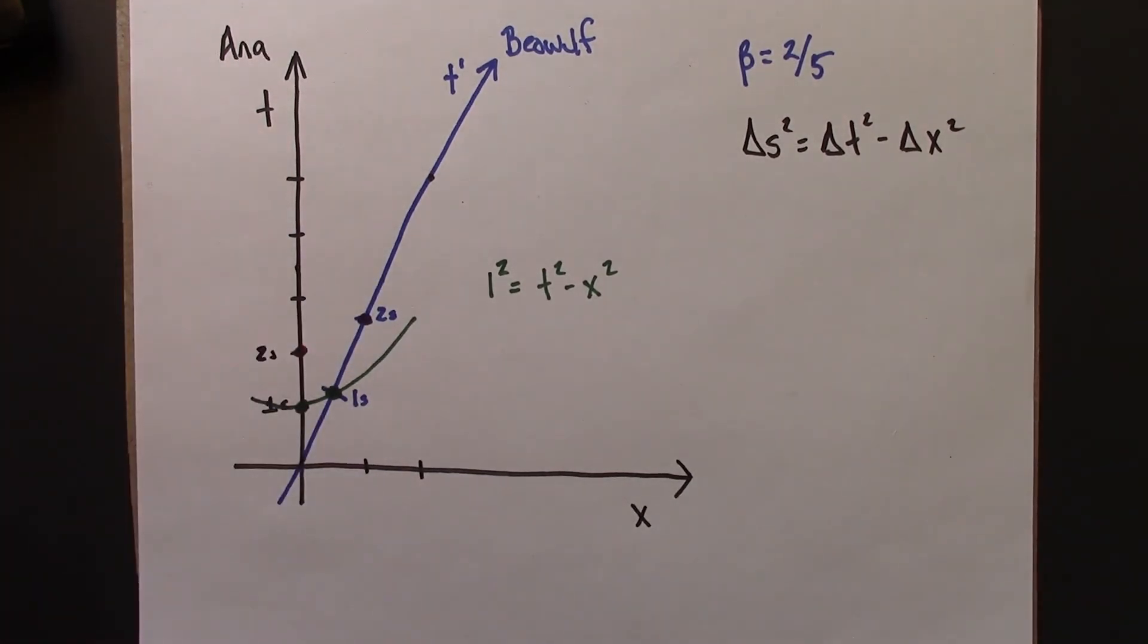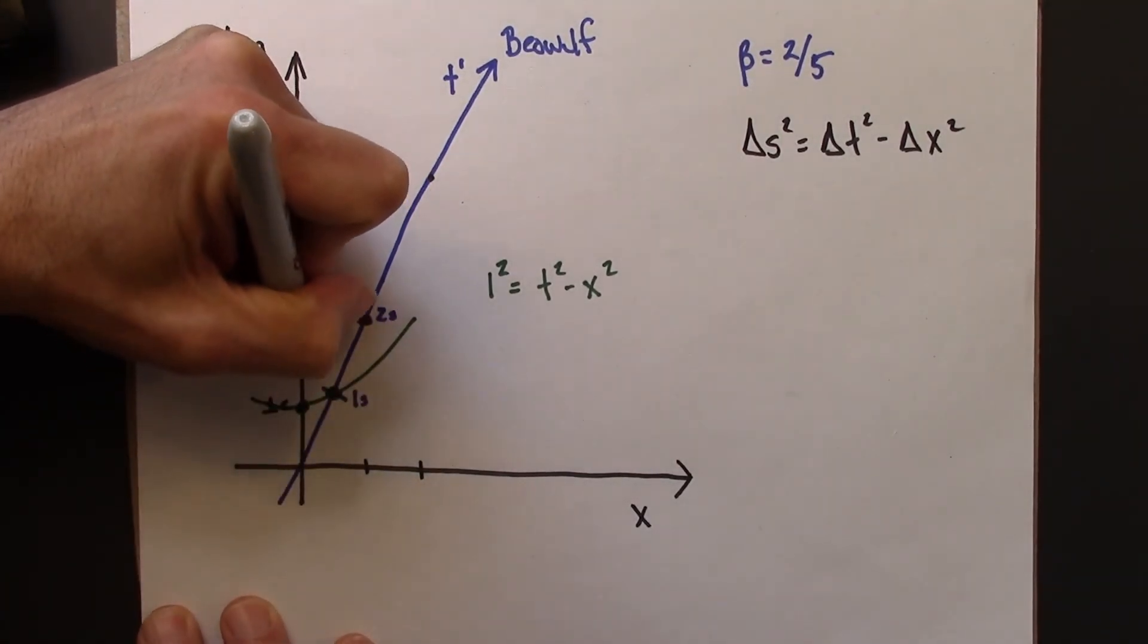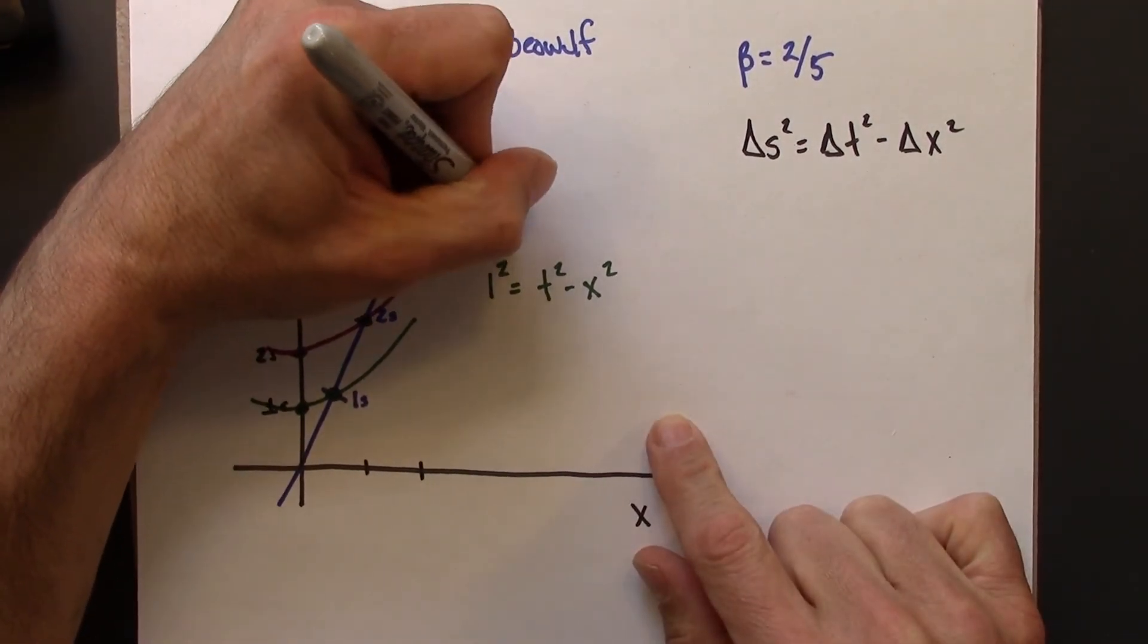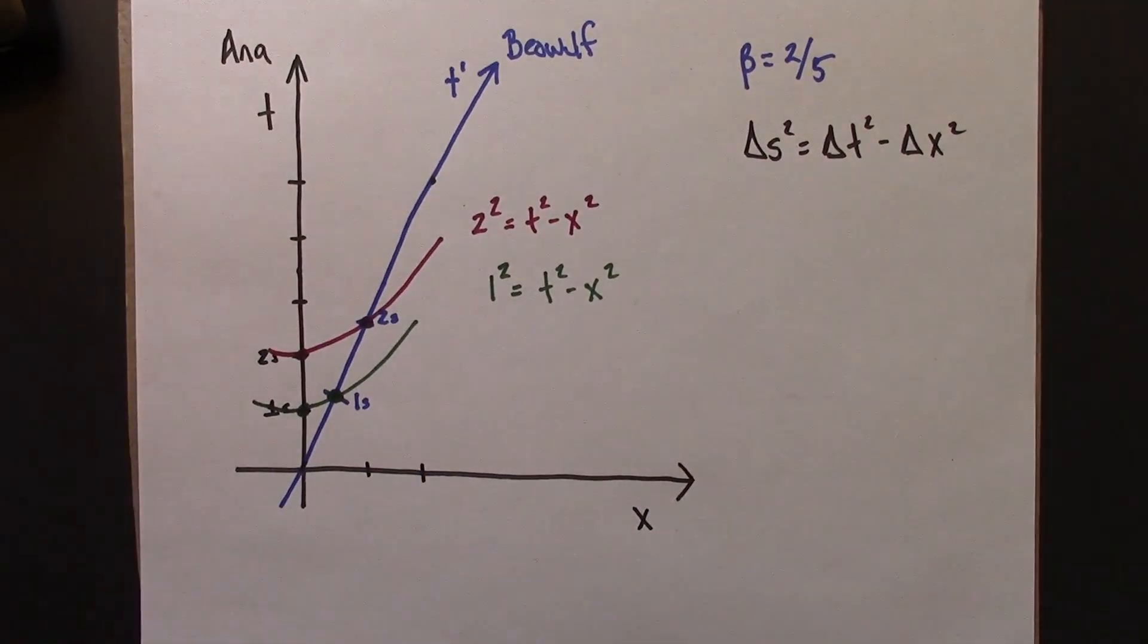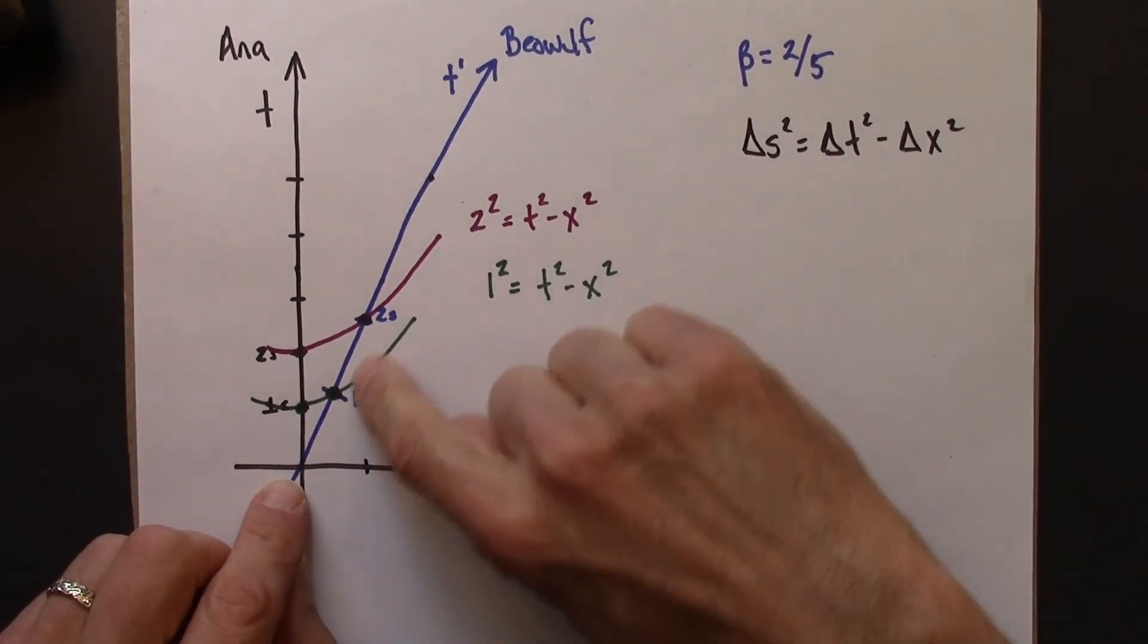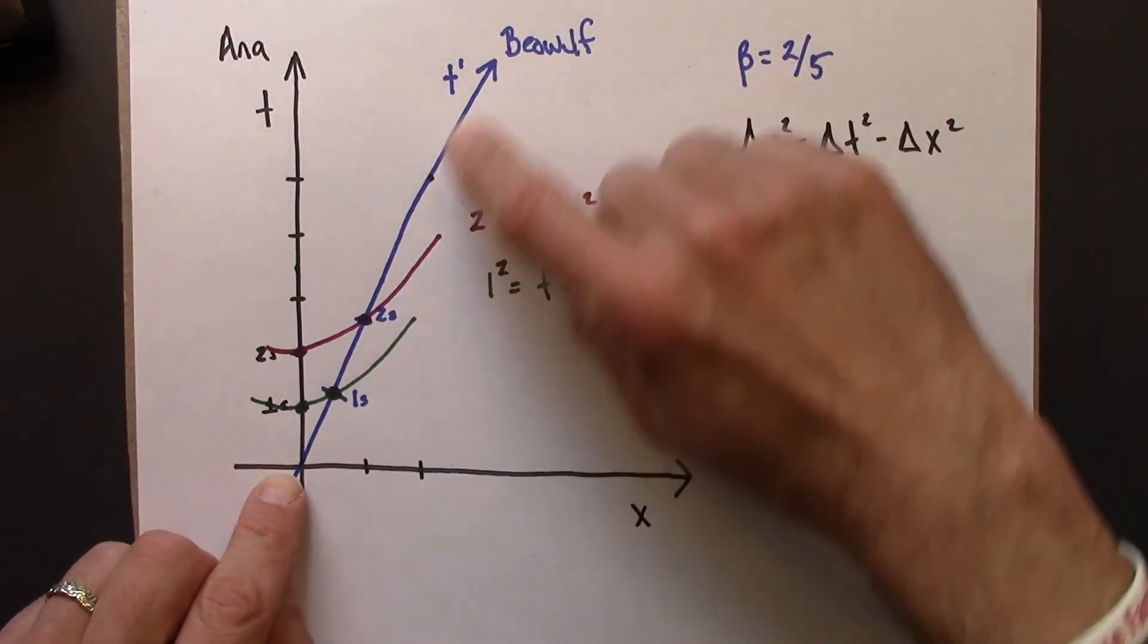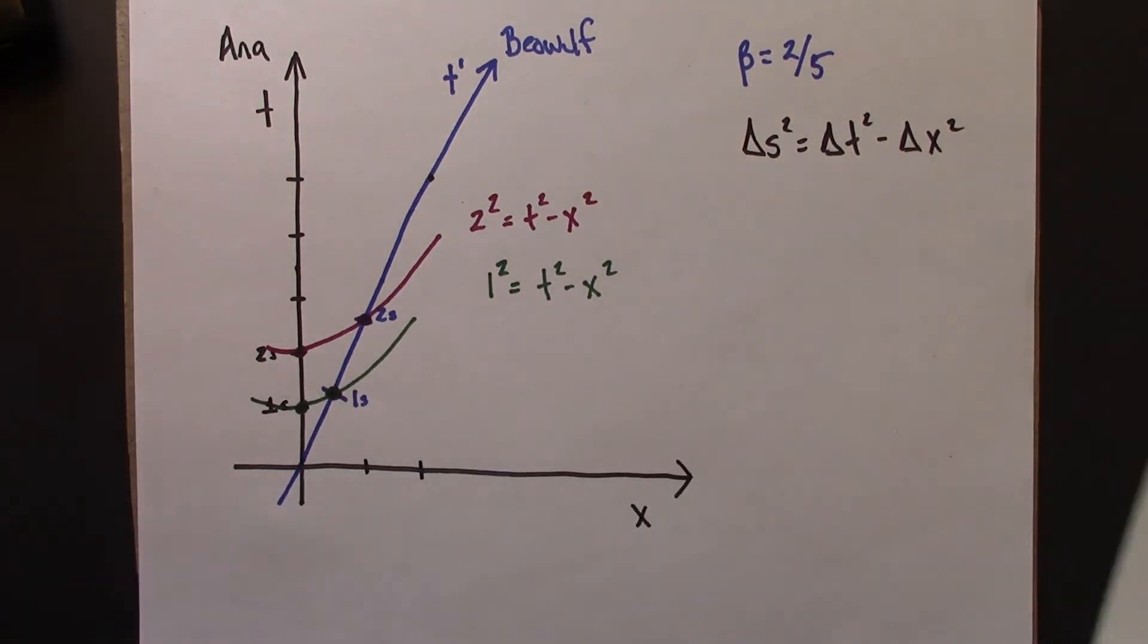And so this and this are connected by this hyperbola. And that would be 2 squared equals t squared minus x squared. So this tells us how to draw the time axis for Beowulf. We don't know about the space axis yet, but we know how to draw the time axis, and we know how to calibrate it.